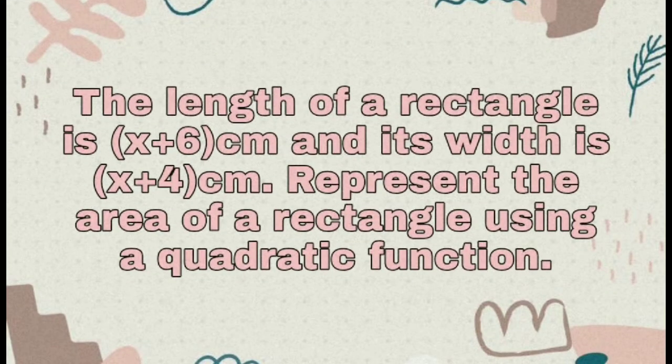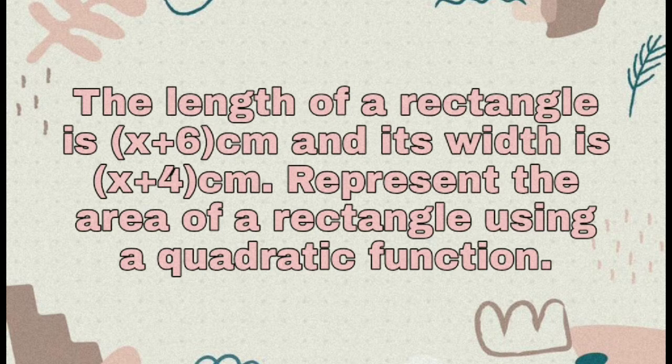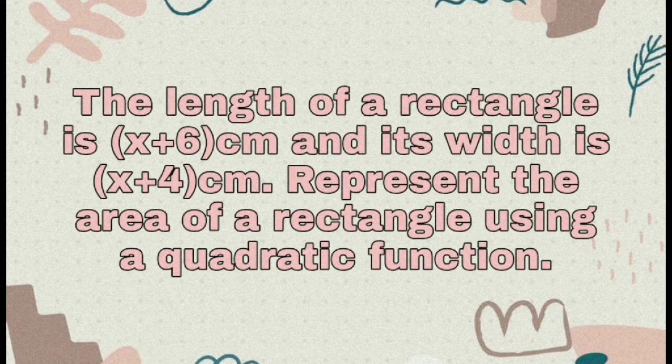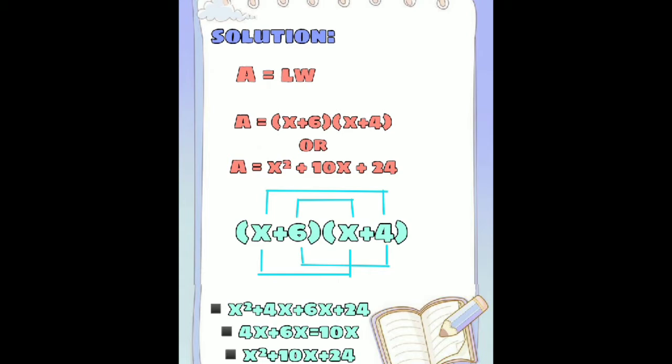I have an example of how a real-life situation can be modeled using a quadratic function. Example: the length of a rectangle is x plus 6 cm, and its width is x plus 4 cm. Represent the area of the rectangle using a quadratic function. So here's the solution: the area of a rectangle is the product of its length and width. Therefore, A equals length times width.